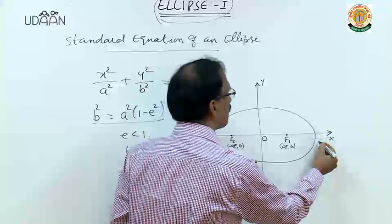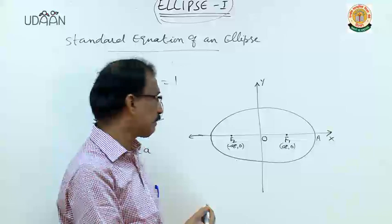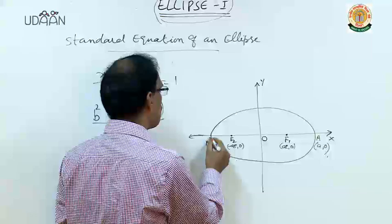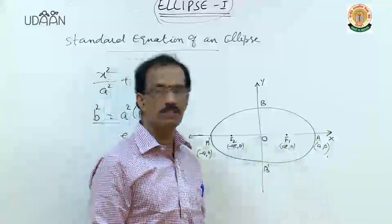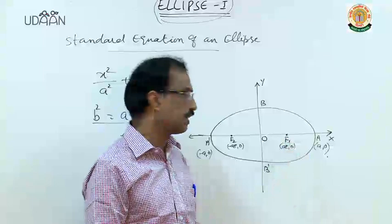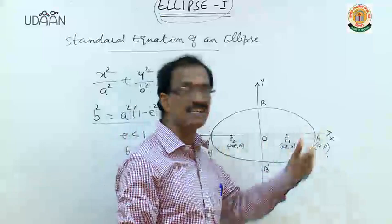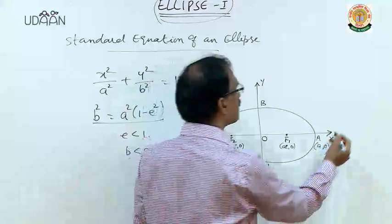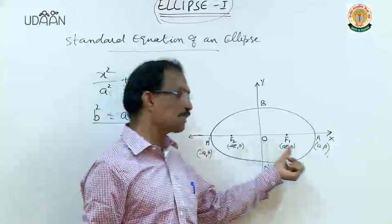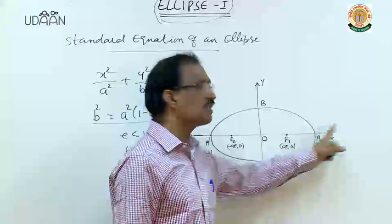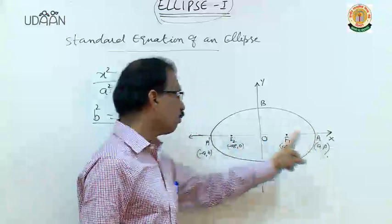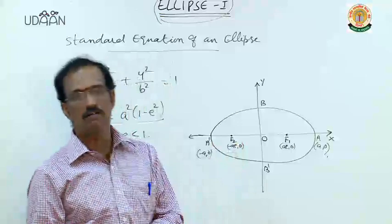These are the two fixed points we have. The vertices are where the curve intersects the axis: (a, 0) and (-a, 0), named A and A'. We also have B and B' on the y-axis. These two fixed points are called the foci. The line where the foci lie is called the focal axis or major axis. Where the curve meets the major axis, those points are called vertices.